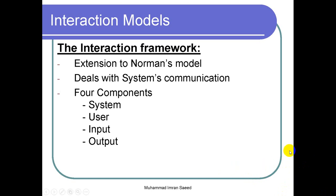In Norman's model, we were discussing only the user and how he was interpreting the states of the system. But now in this interaction framework, we will also study the part of the system and output. So we have four components now: there is the user who provides the input, then the system which processes and provides the output. So now let's start with the interaction framework.